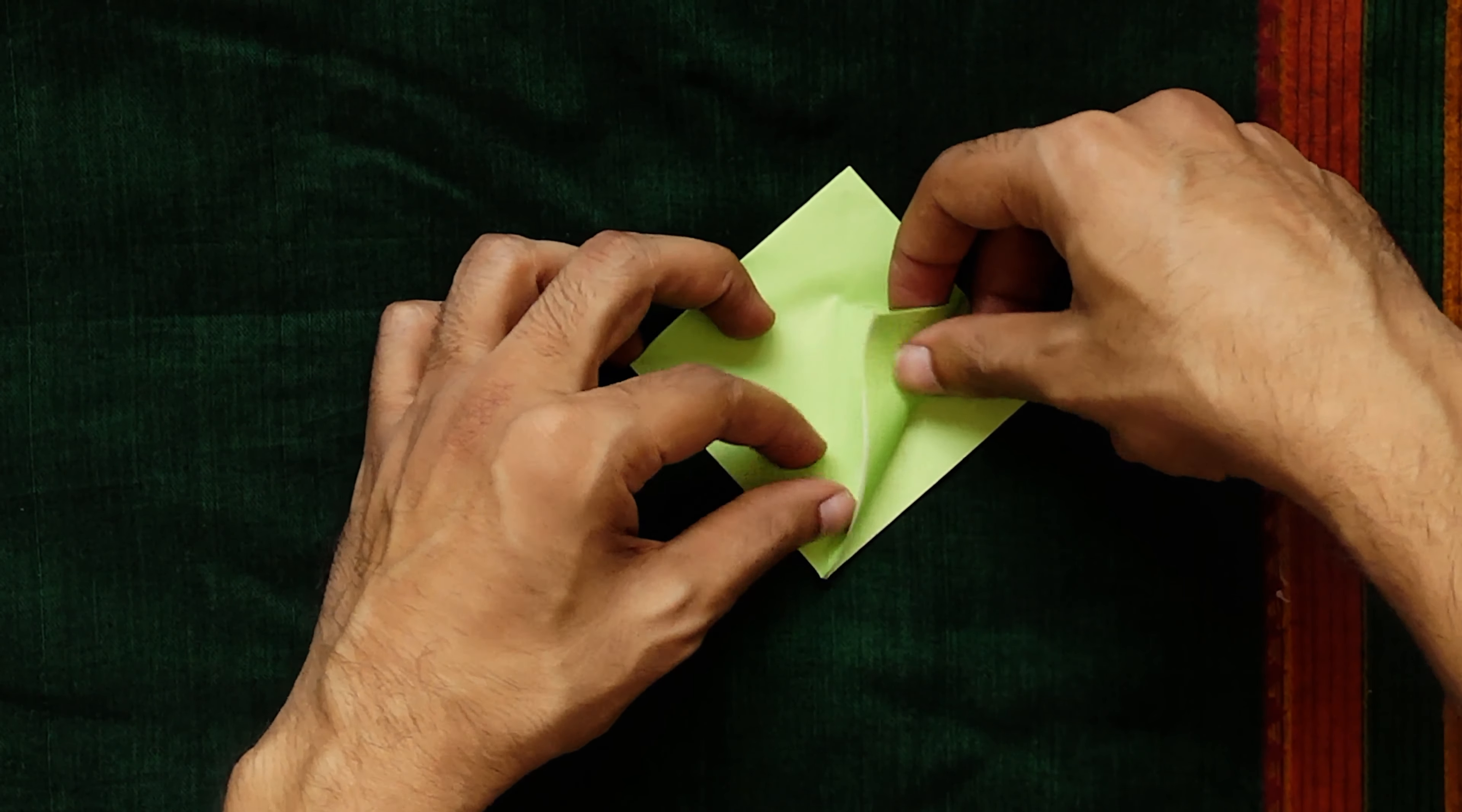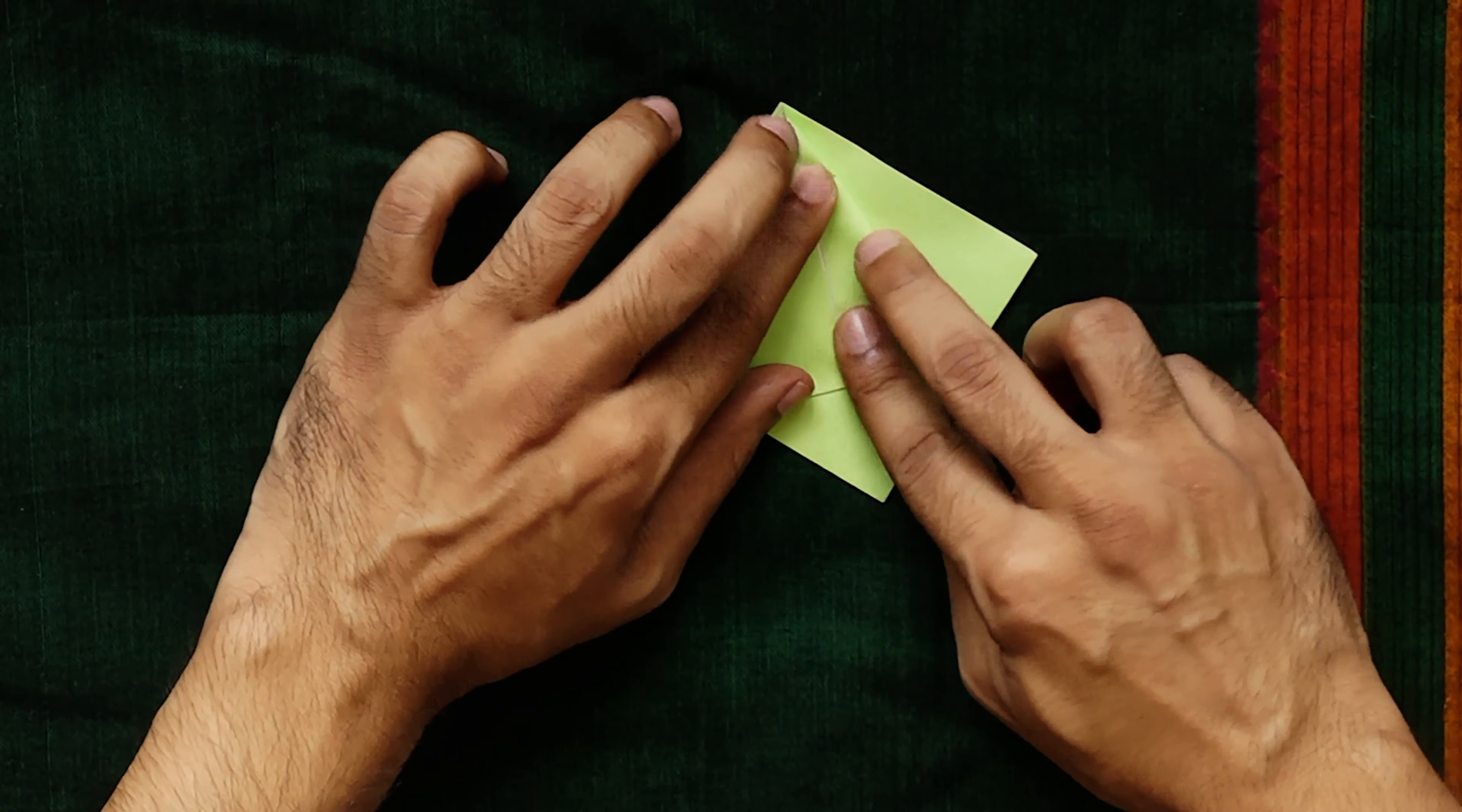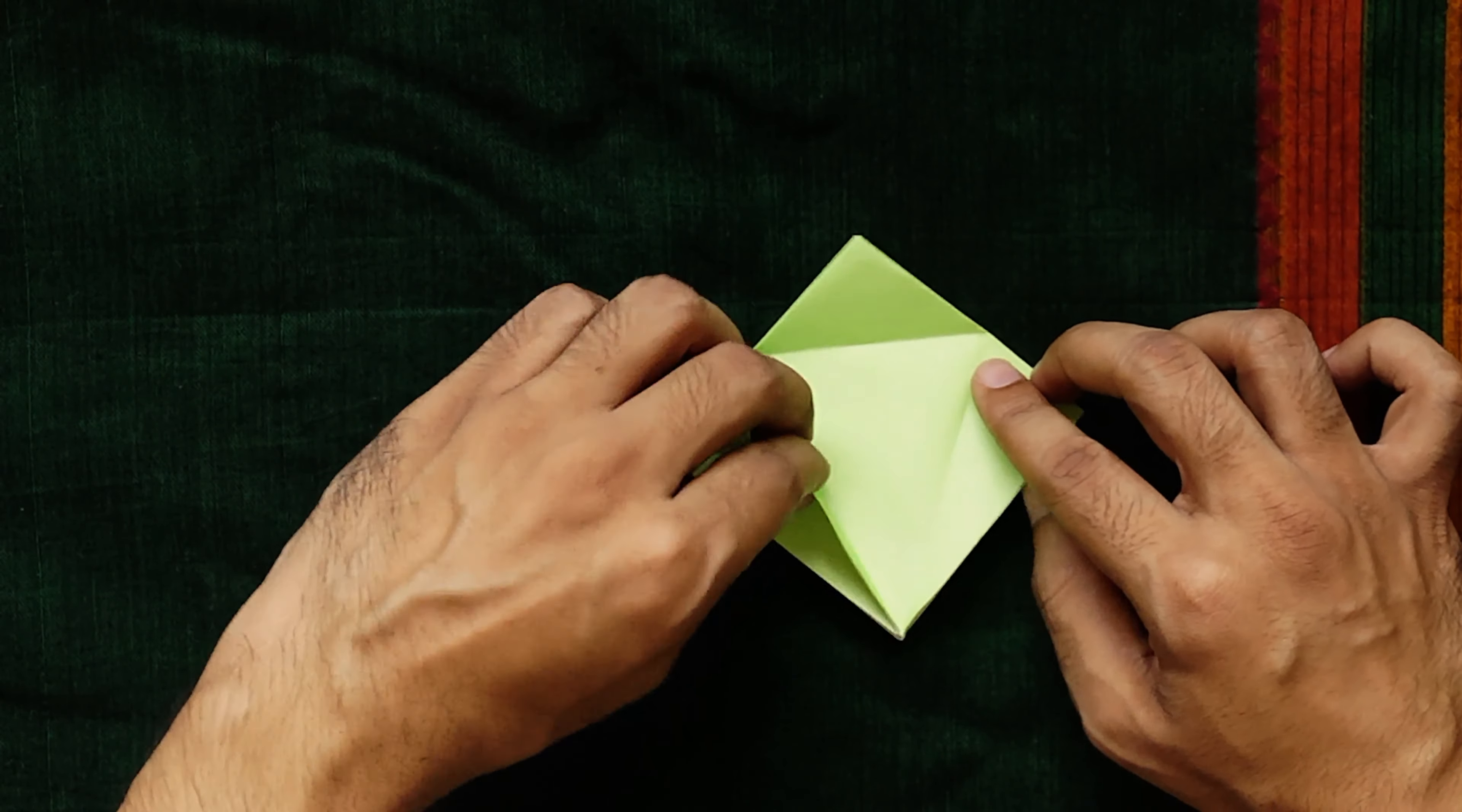Fold the top layer of both bottom edges of your diamond to the center line. Fold the top triangular bit downwards along its base line. Unfold all three last folds to get this triangular crease.